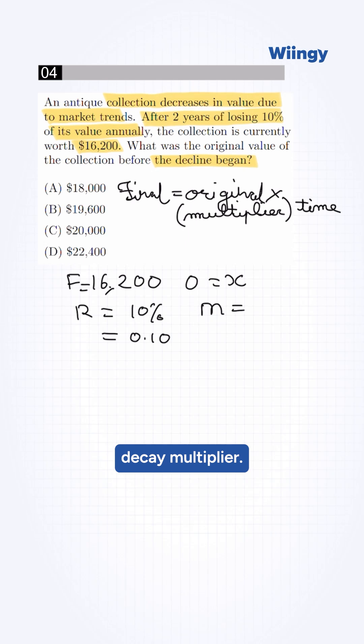Multiplier is a decay multiplier, so 1 minus rate is 0.10, which is 0.90. So putting this value into our formula,